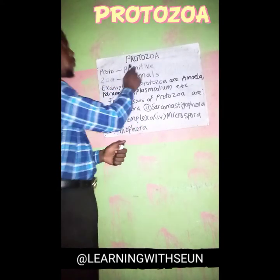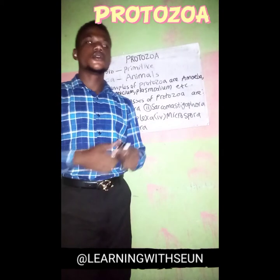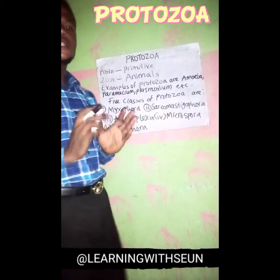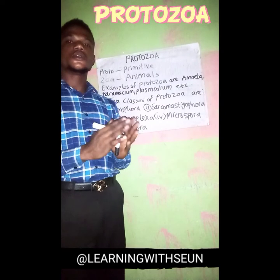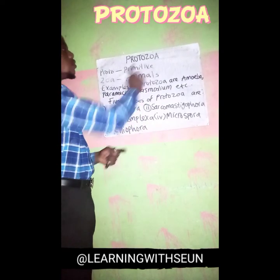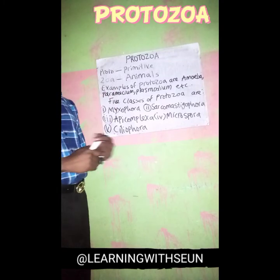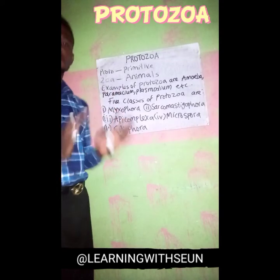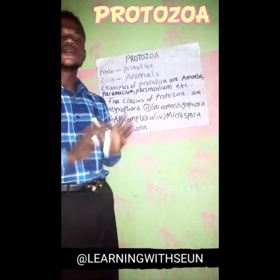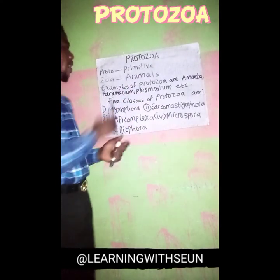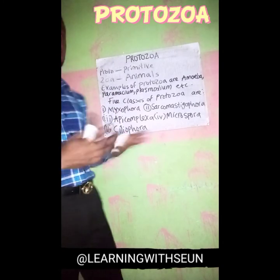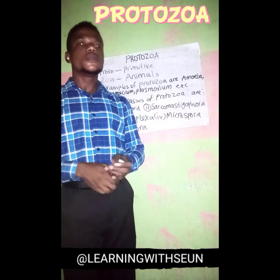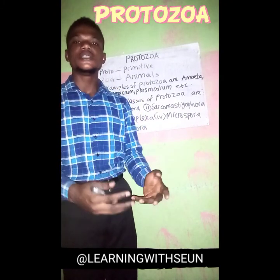What we are going to be doing now is what we call protozoa. The first thing you have to understand about protozoa is that they are divided into two major word parts. One is 'proto' and the other is 'zoa'. Proto means primitive, and zoa means animal in biology. So proto means primitive, zoa means animals, and we now define protozoa as primitive animals.